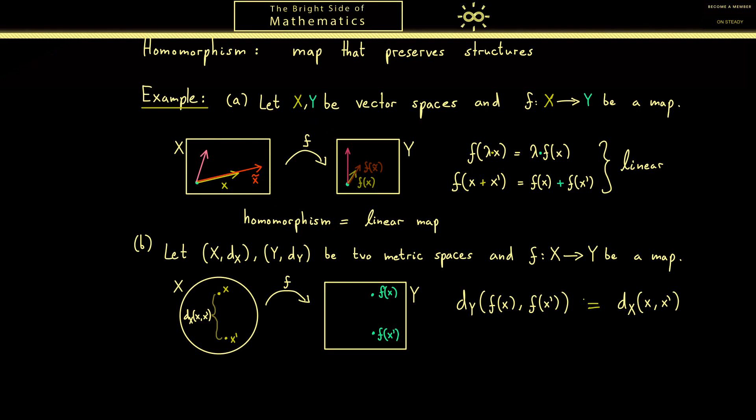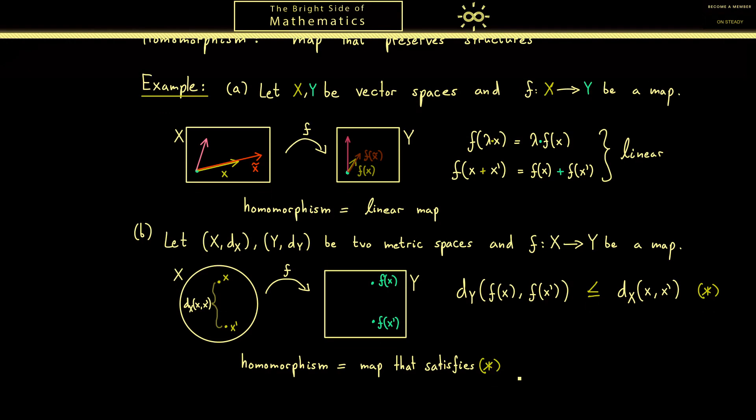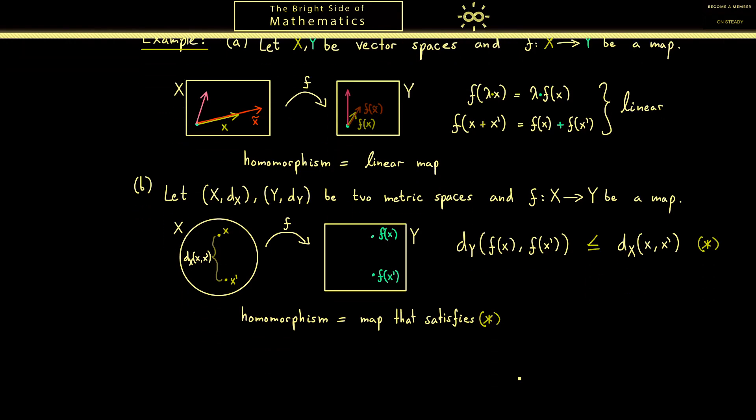To get a similar property for the metric spaces we can say okay maybe the distance can get smaller but not greater. This then guarantees that we always find homomorphisms no matter how small the metric space Y is compared to X. Okay, in summary maps that fulfill this property star are now homomorphisms for metric spaces. So please keep these examples in mind and then I can finally tell you what an isomorphism is.